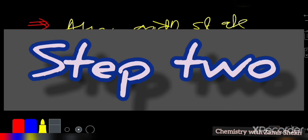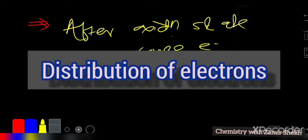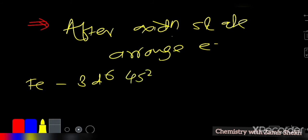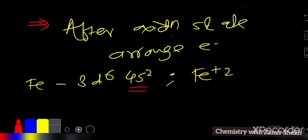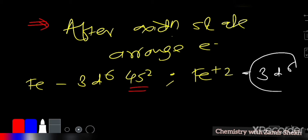After finding the oxidation state, we arrange the electrons. Iron has atomic number 26, with neutral configuration [Ar] 3d⁶ 4s². Since iron is in the +2 state, it loses two electrons, giving a configuration of 3d⁶ only. This is step two — arranging electrons after determining the oxidation state. This gives us the 'd system' of the metal ion.